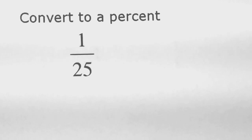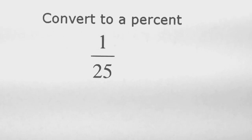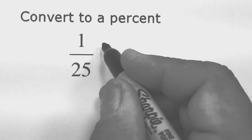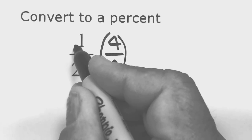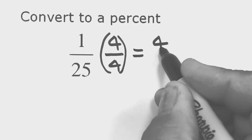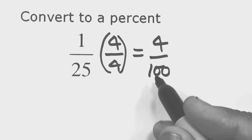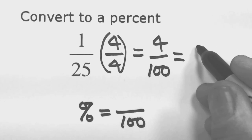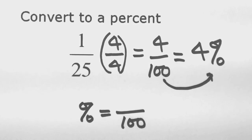Convert one twenty-fifth to a percent. It's easy to take twenty-five and multiply by four to get one hundred, so multiply both top and bottom by four. Upstairs: four times one is four. Downstairs: four times twenty-five is one hundred. Trade the over one hundred in for the percent sign — four percent.